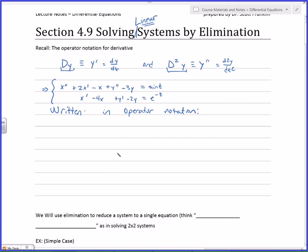So let's write that in operator notation. Now, if you did it directly, you get like d squared x plus 2dx minus x plus d squared y minus 3y equals sine of t. And dx minus 4x plus dy minus 2y equals e to the minus t.